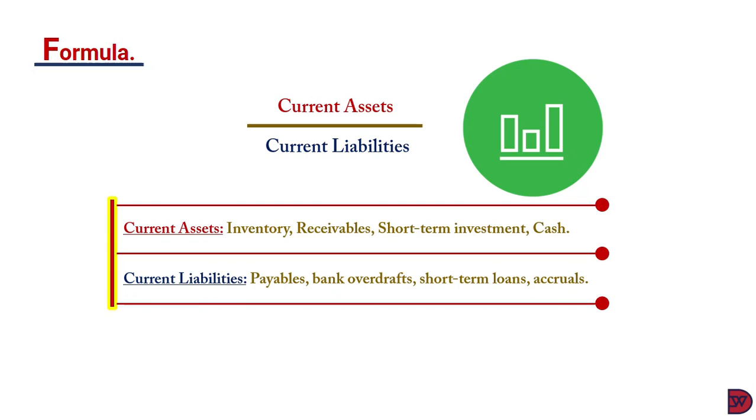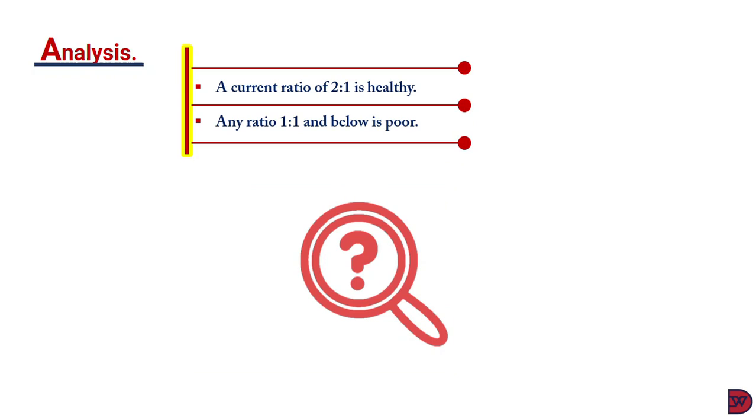Let's look at how to analyze the current ratio. Ideally, a current ratio of 2:1 is healthy. This means that the business's current liabilities can be settled twice by the current assets. Anything 1:1 and below is poor. If a ratio of 1:1 is arrived at, it means that the business has exactly the amount of current assets to settle current liabilities.